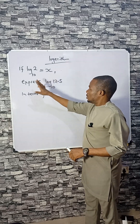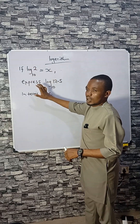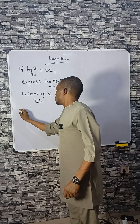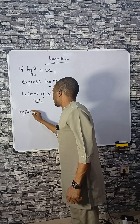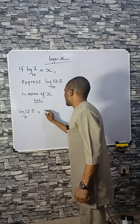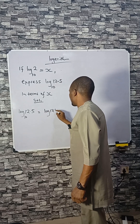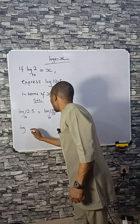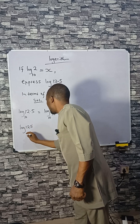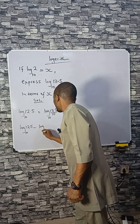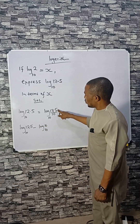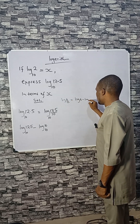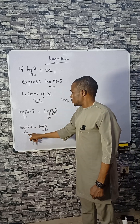We are considering logarithms today. If log 2 base 10 equals x, express log 12.5 base 10 in terms of x. Solution: log 12.5 base 10 can be expressed as log(125/10) base 10. We subtract because log(a/b) equals log a minus log b, so we write log 125 base 10 minus log 10 base 10.